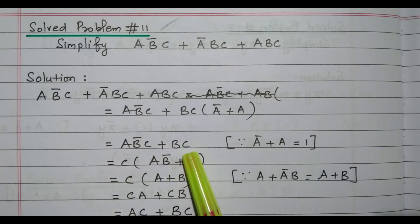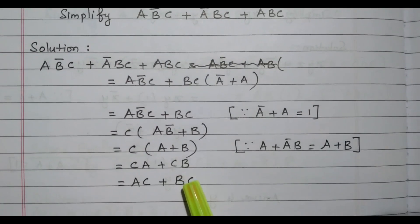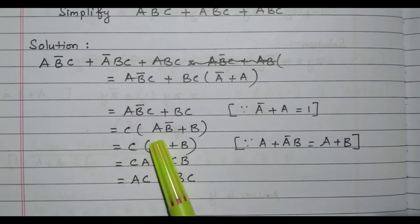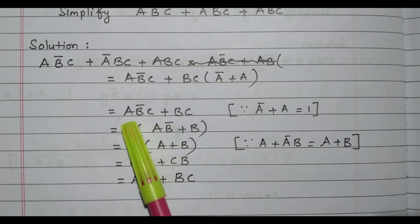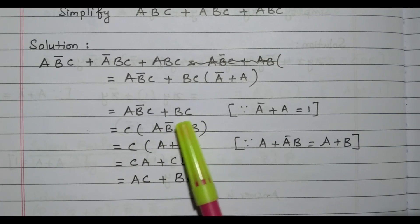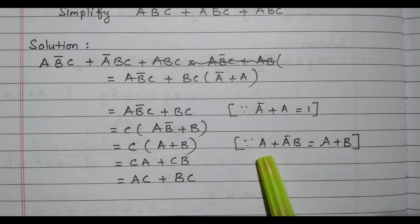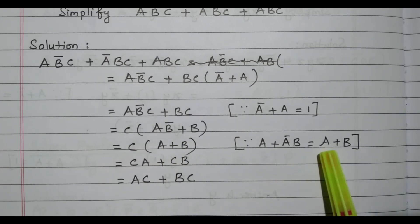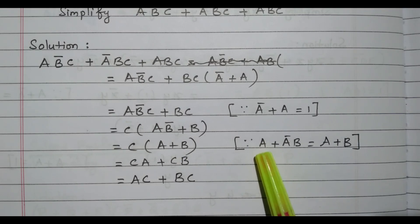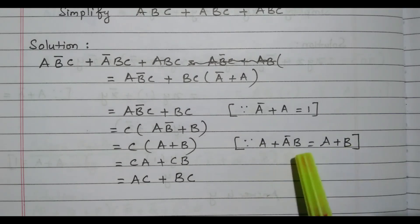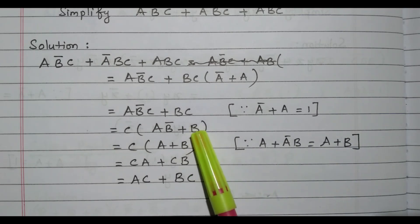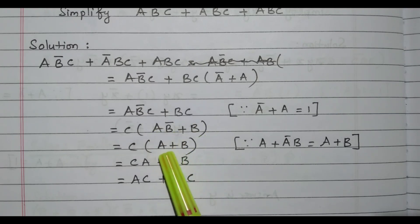Now we have abc̄ + bc. We can take c outside since c is available commonly in both terms. Taking c outside: remaining term from abc̄ is ab̄ — wait, remaining is ab̄ — and from bc the remaining term is b. So we have c(ab̄ + b). Now we apply the theorem a + āb = a + b: here a is b, ā is b̄, and the other term is a. So ab̄ + b simplifies to a + b.